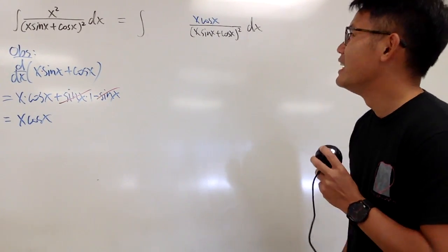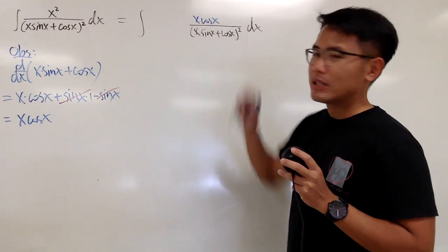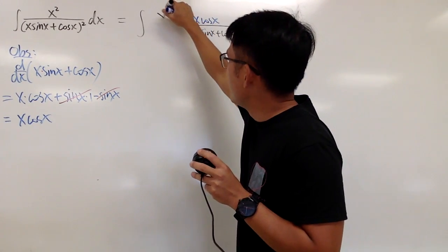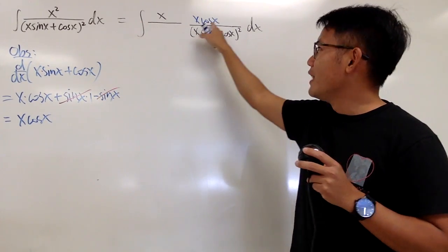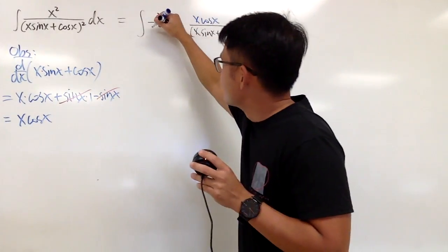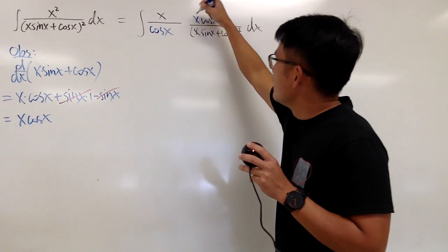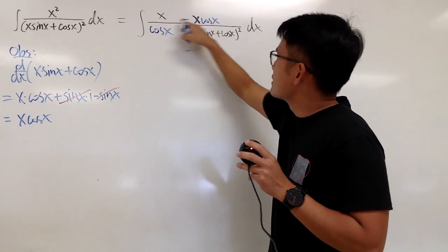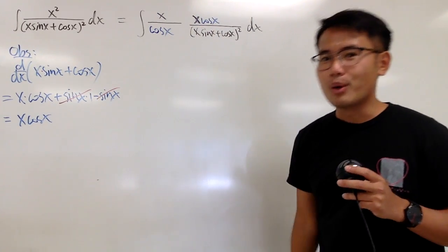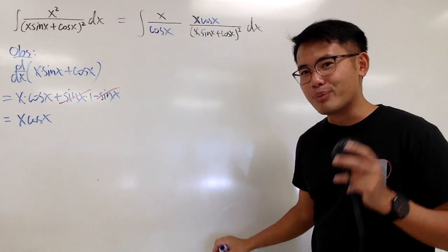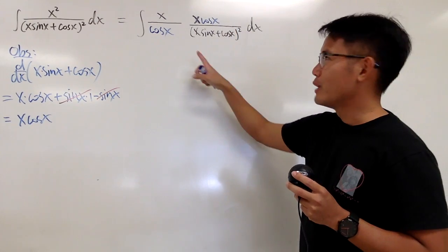Originally I have x squared on top, but now I only have x to the first power, so I need to multiply by x. And originally I didn't have cos x, so I just have to divide by cos x. If you look at x times x that's x squared, and the cos x cancels, so this is the same as the original. The purpose of doing this is that we can proceed with integration by parts: integrate this part and differentiate this part.